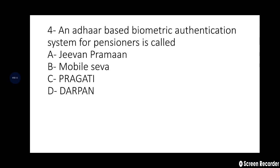Fourth question: An Aadhaar-based biometric authentication system for pensioners is called — A: Jeevan Praman, B: Mobile, C and D are other options. Option A, Jeevan Praman, is the right answer. It is an Aadhaar-based biometric authentication system made specifically for pensioners. Pragati is a platform for transparency and accountability, implemented in 2015.